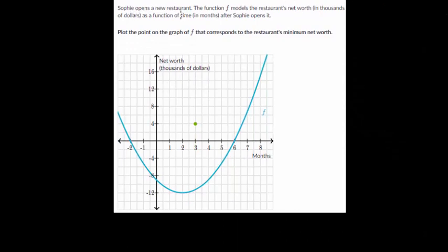Sophie opens a new restaurant. The function f models the restaurant's net worth in thousands of dollars as a function of time in months after Sophie opens it. With all these problems, you want to familiarize yourself with the variables. Our x-axis here is time, specifically time in months since she opened the restaurant. And our vertical axis is net worth, so that's how much money the business is in thousands of dollars.